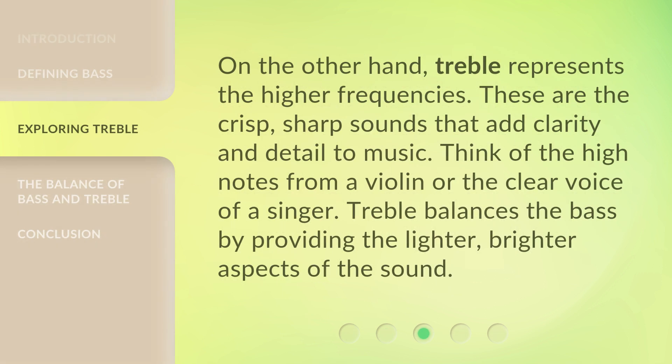On the other hand, treble represents the higher frequencies. These are the crisp, sharp sounds that add clarity and detail to music. Think of the high notes from a violin or the clear voice of a singer. Treble balances the bass by providing the lighter, brighter aspects of the sound.